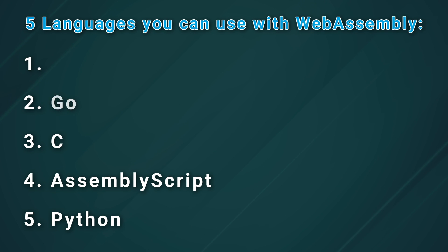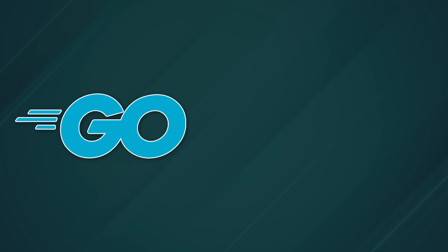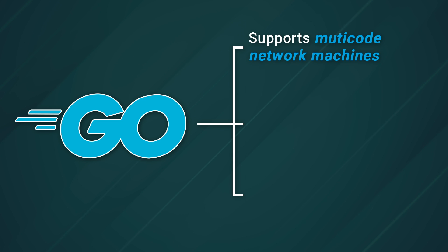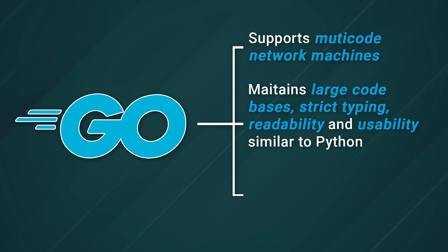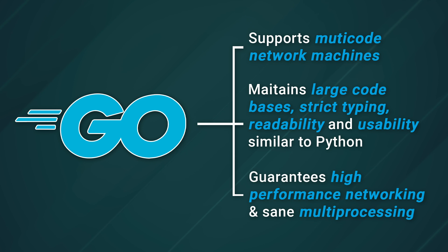Next up we have Go at number two. Go is a language created by Google back in 2009. The design goals were simple: support multi-core network machines, maintainability for large code bases, strict typing, readability and usability similar to Python, high-performance networking, and sane multiprocessing.